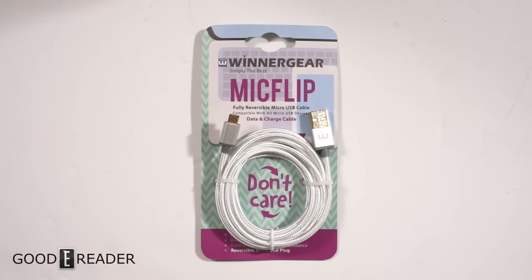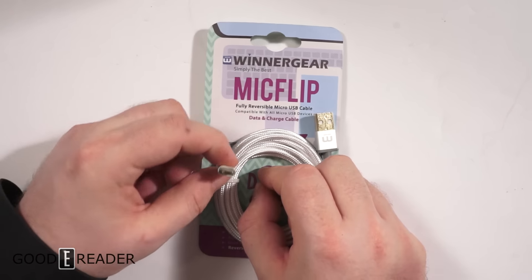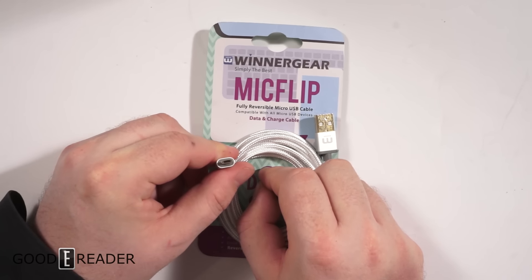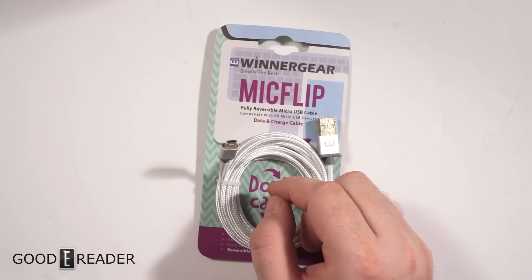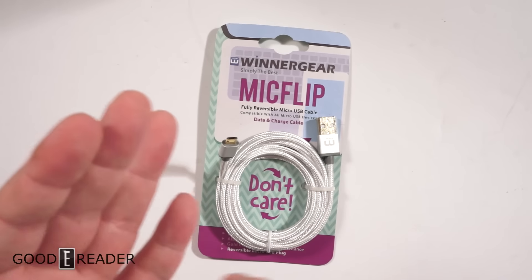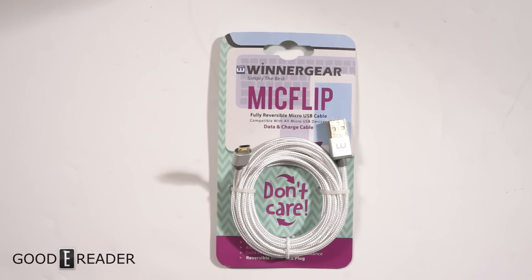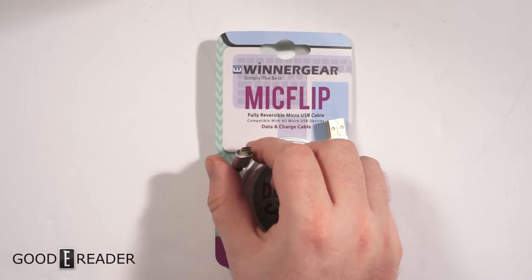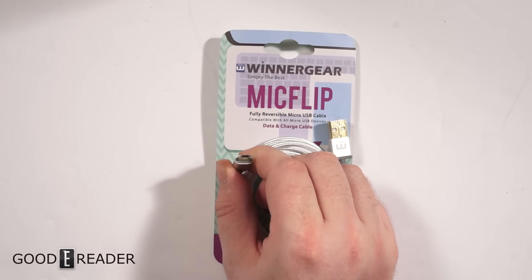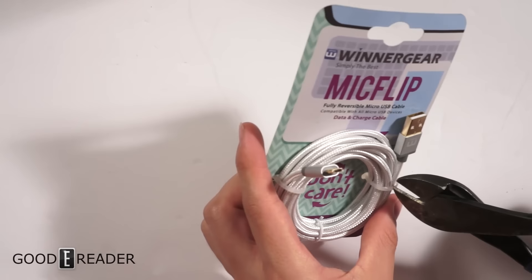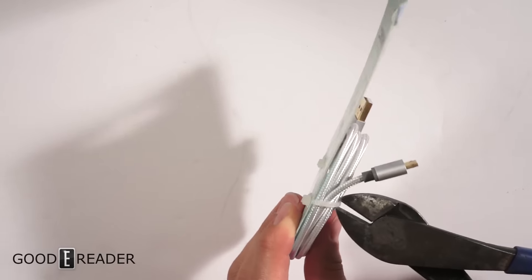It's a reversible micro USB plug, and the thing about this is you can plug it in either side and it'll charge your device. For me, a lot of times I'm sticking it in and it won't fit, then you reverse it and it fits because some devices actually have the micro USB port flipped. Sometimes you have to plug a traditional USB port upside down for it to actually work. This will fit both ways, so we're going to give it a little unboxing, plug it into a device, and give you our first impressions.